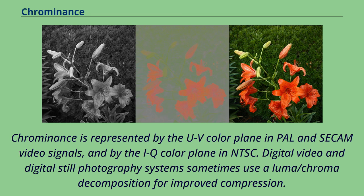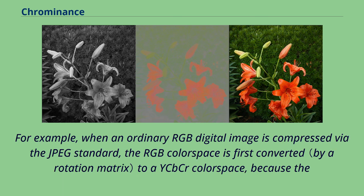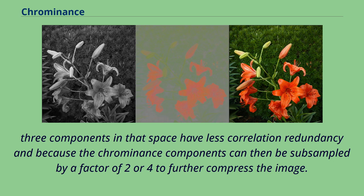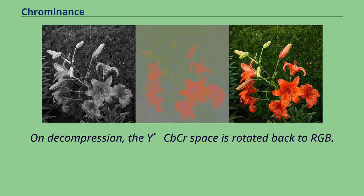Digital video and digital still photography systems sometimes use a luma-chroma decomposition for improved compression. For example, when an ordinary RGB digital image is compressed via the JPEG standard, the RGB color space is first converted to a YCbCr color space, because the three components in that space have less correlation redundancy, and because the chrominance components can then be subsampled by a factor of 2 or 4 to further compress the image. On decompression, the YCbCr space is rotated back to RGB.